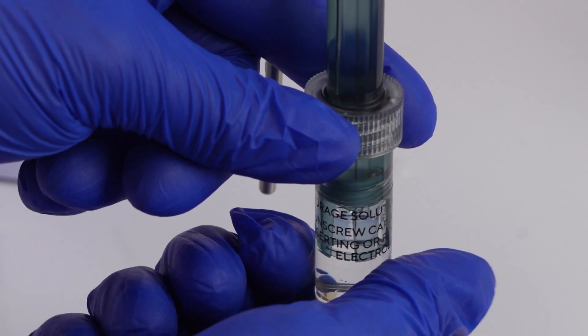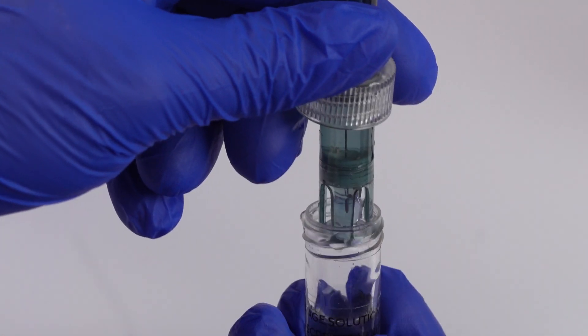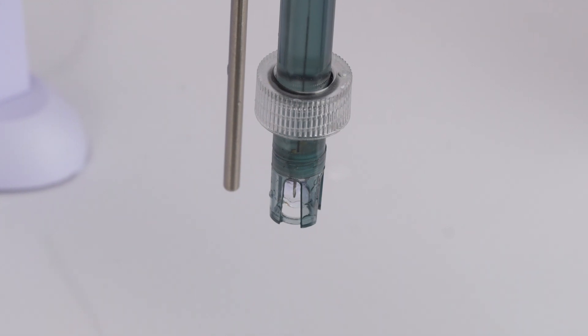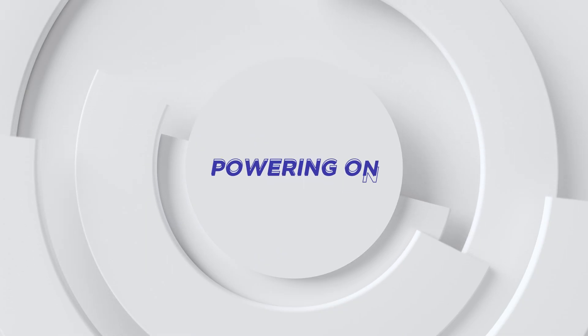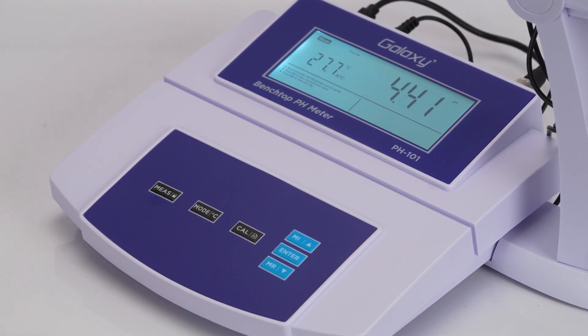Before use, remove the protective cap from the pH electrode. If you see air bubbles inside the glass membrane, gently shake the electrode downward to dislodge them. To power on the meter, press the measure key for about five seconds.